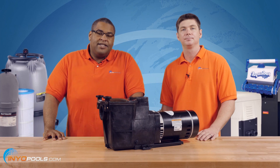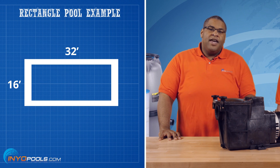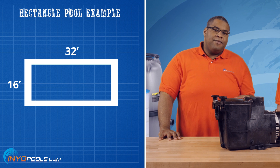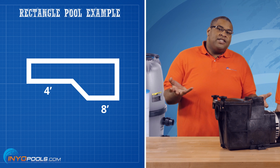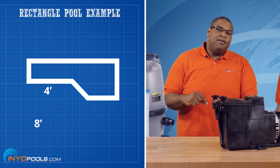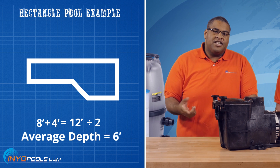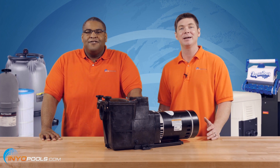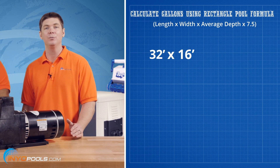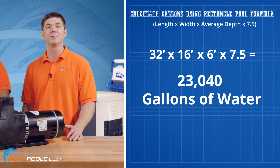Now let's work with a real-world example. Let's say we have a 16 by 32 foot pool — 16 feet wide and 32 feet long — and we need to figure out the average depth. The deep end is 8 feet, the shallow end is 4 feet. Add 8 plus 4 to get 12, then divide by 2, which gives us an average depth of 6 feet. So: 32 times 16 times 6 times 7.5 equals 23,040 gallons.